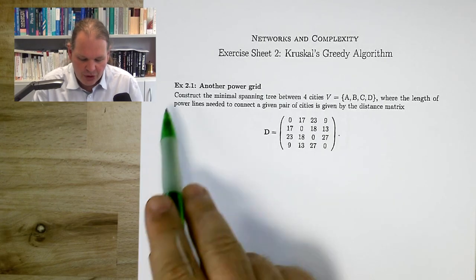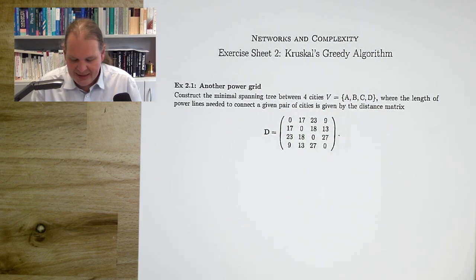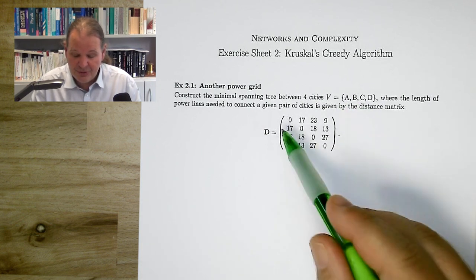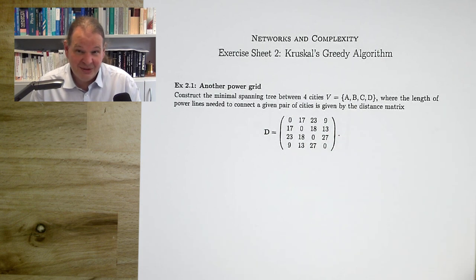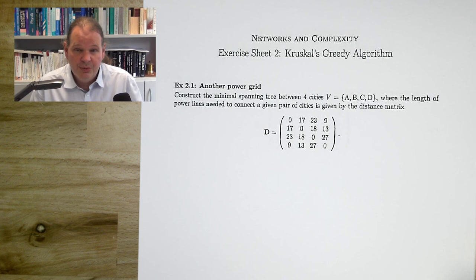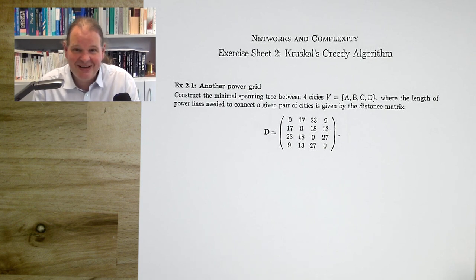This exercise asks us to construct the minimum spanning tree between four cities called A, B, C, and D. The distance is given by a distance matrix D. I'm assuming A is the first row and column, B is the second, and so on. The ordering is not explicitly given, but it's pretty intuitive. Your task is to find the minimum spanning tree — construct a network where all the cities are on the same component while the combined length of the links is minimal. Pause the video and see if you can find the answer.